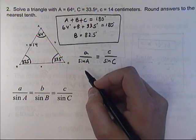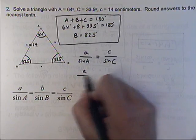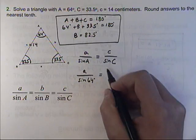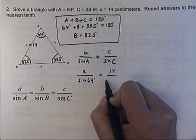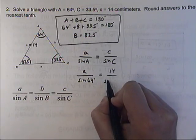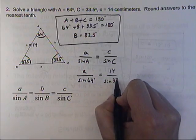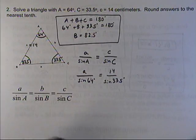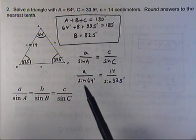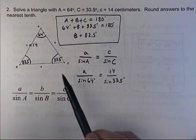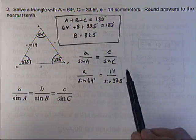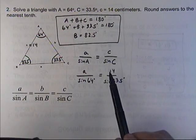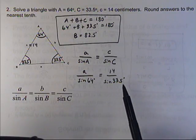So that would be side A over the sine of angle A, which is 64 degrees, equals side C, which is 14 centimeters, over the sine of angle C, which is 33.5 degrees. So I'm just going to cross multiply now — multiply the sine of 64 degrees on both sides and cancel.